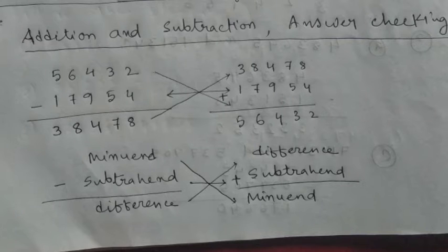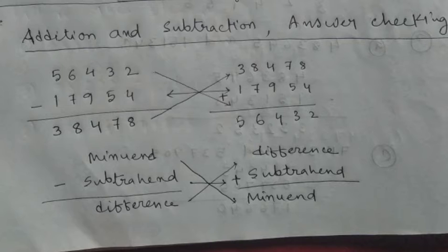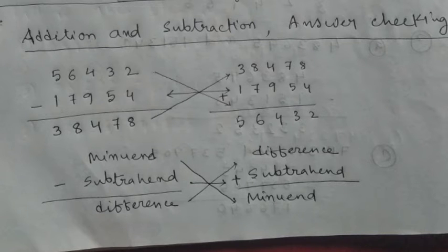The first number is the minuend, the second is the subtrahend, and the result is the difference. The minuend minus the subtrahend equals the difference. For checking, if we interchange the positions of the minuend and difference, the subtrahend position stays the same. Then: difference plus subtrahend equals minuend.